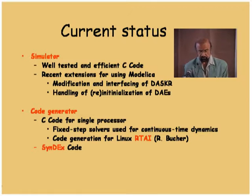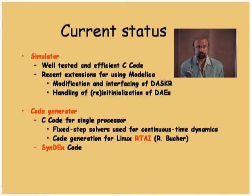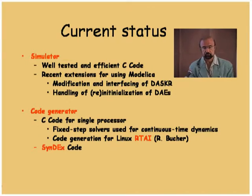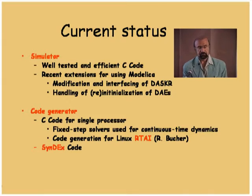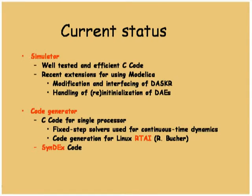The C code generator can generate code for a single processor. If you have continuous time components in your model, instead of using a variable step solver as used in CYCOS, we use fixed step solvers embedded within the generated code. We can do specific code generation for real-time Linux — that's a contribution of Roberto Bucher — and we can also generate Syndex code, which is an INRIA product for multiprocessor environments.